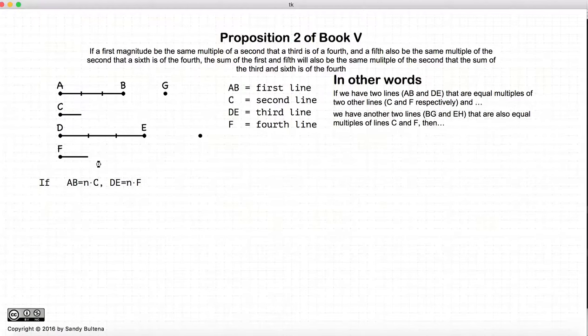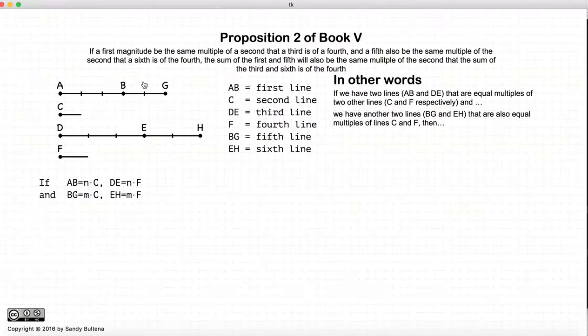In addition to that, we have another two lines, BG and EH, that are also equal multiples of C and F. In other words, BG is equal to MC and EH is equal to MF. And in this example, M is equal to 2.